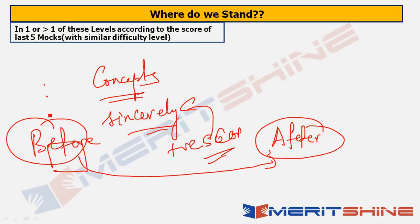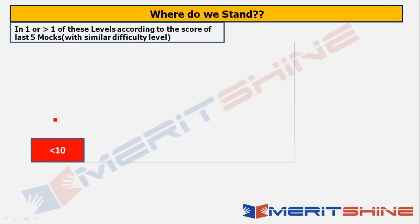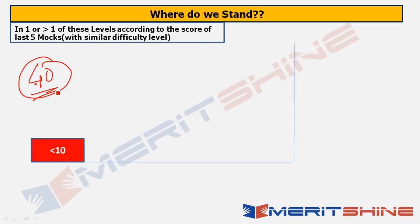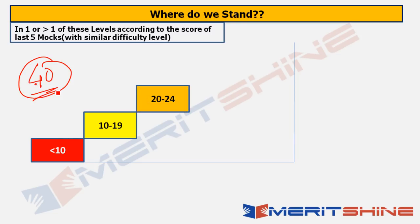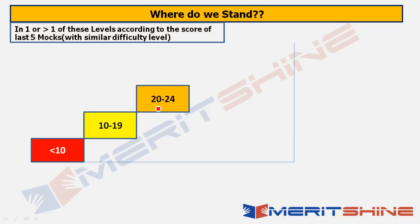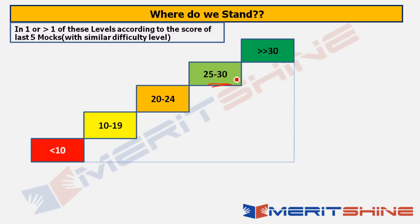Here is the staircase for Mains. In OIBVS Mock 1, total marks were 40. Less than 10 is a red category. 10 to 19 is possibly okay but not good at all. 20 to 25 is the average score that everyone should have got without trying much. 25 to 30 is a good score, and more than 30 is a very good score.